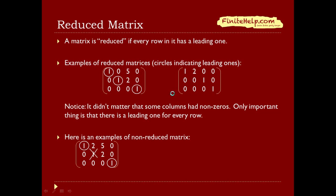Here's another example: row 1 has a leading 1, row 2 has a leading 1, and row 3 has a leading 1. And here's an example of a non-reduced matrix: row 1 has a leading 1, row 3 has a leading 1, but row 2 doesn't have a leading 1 because this 1 is not in a column full of zeros.